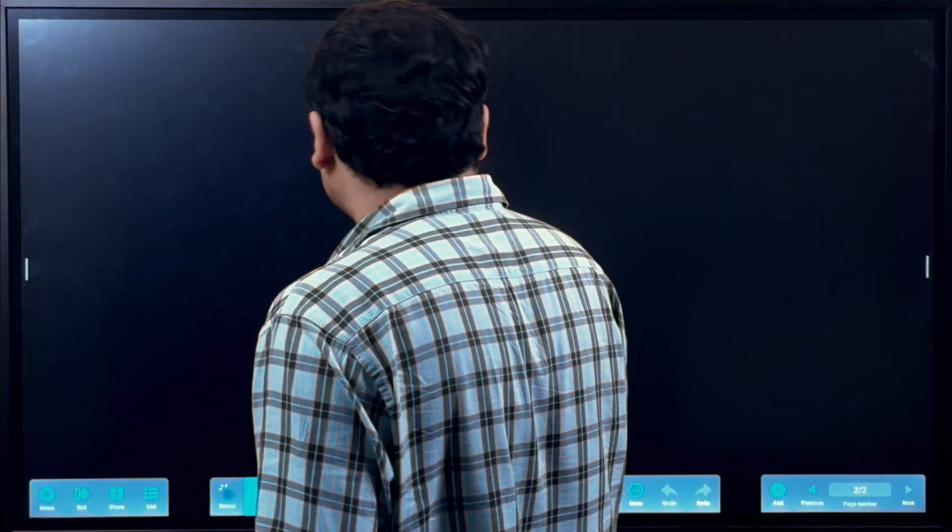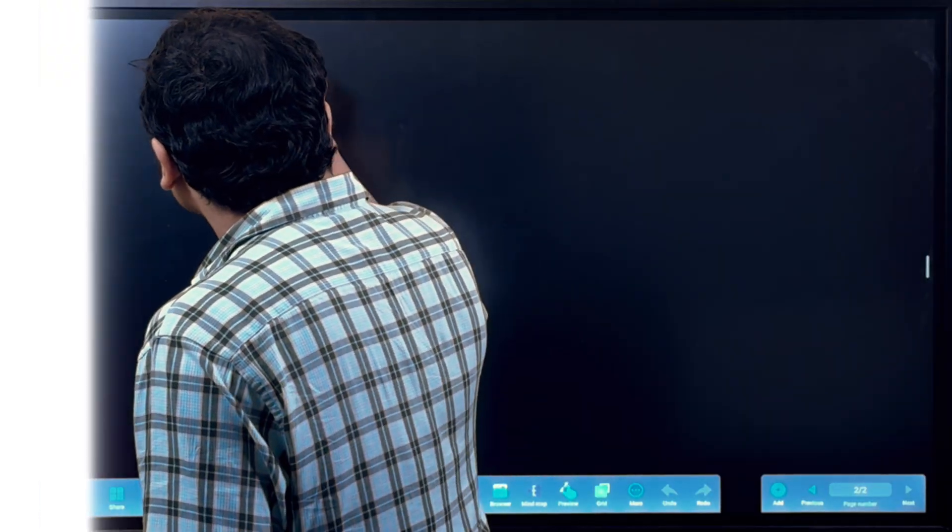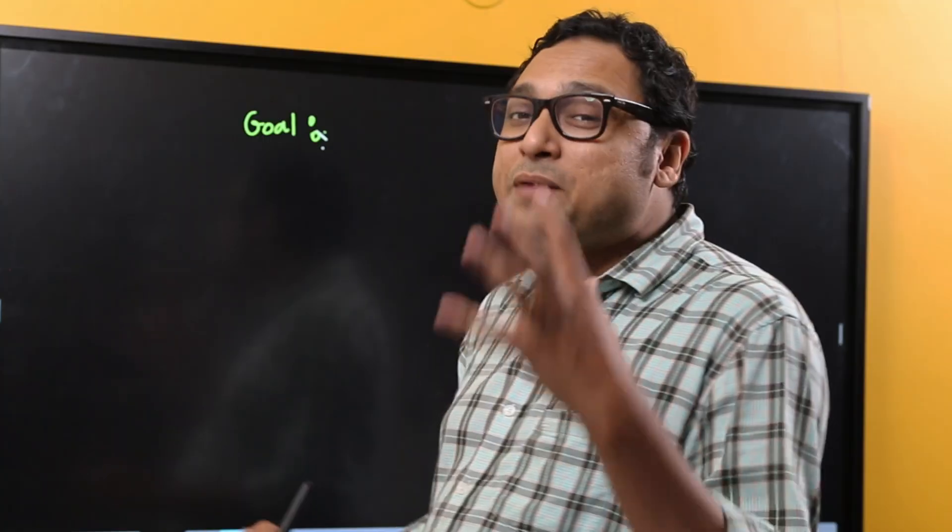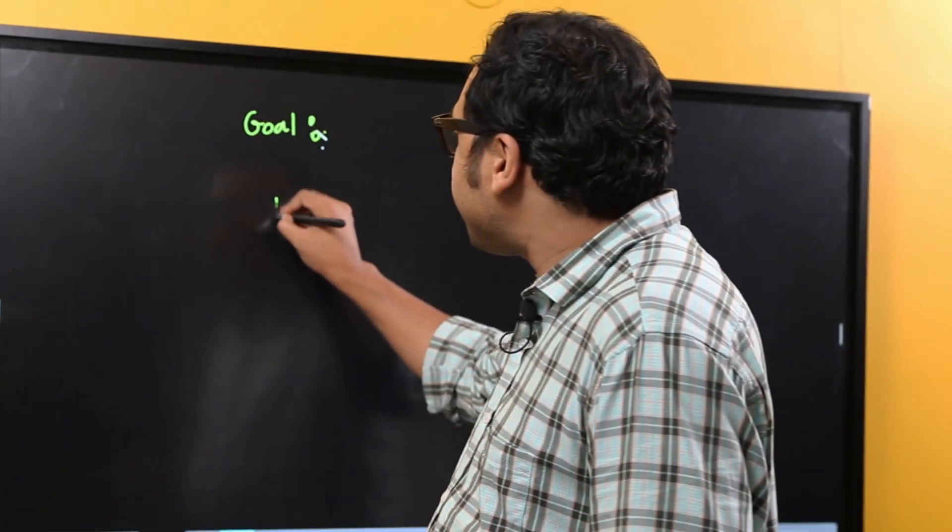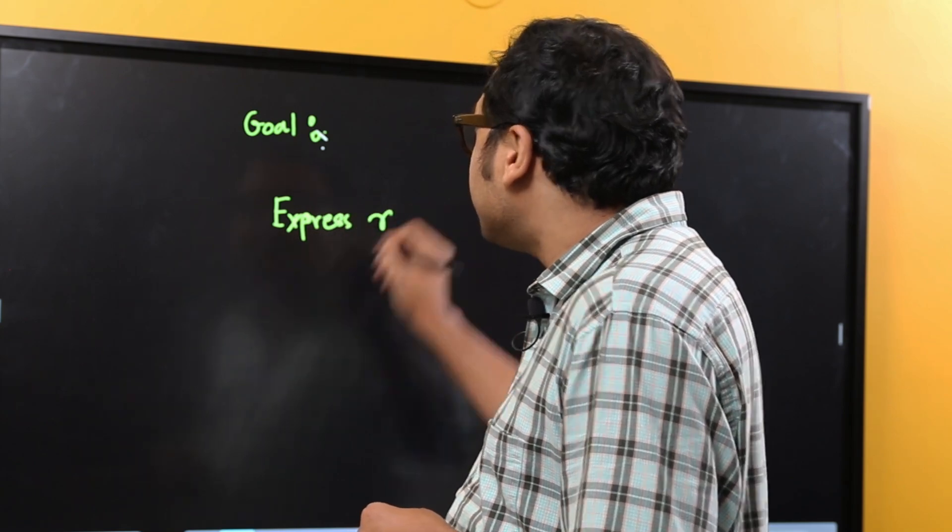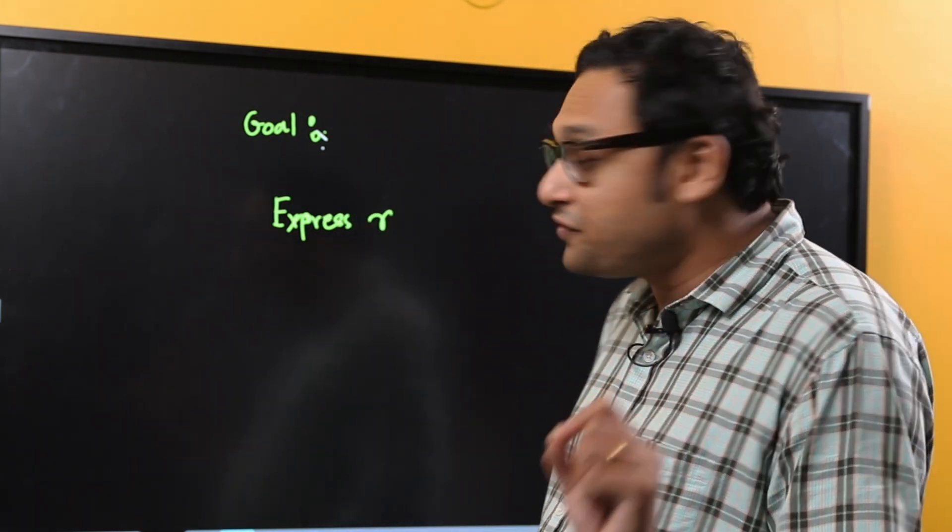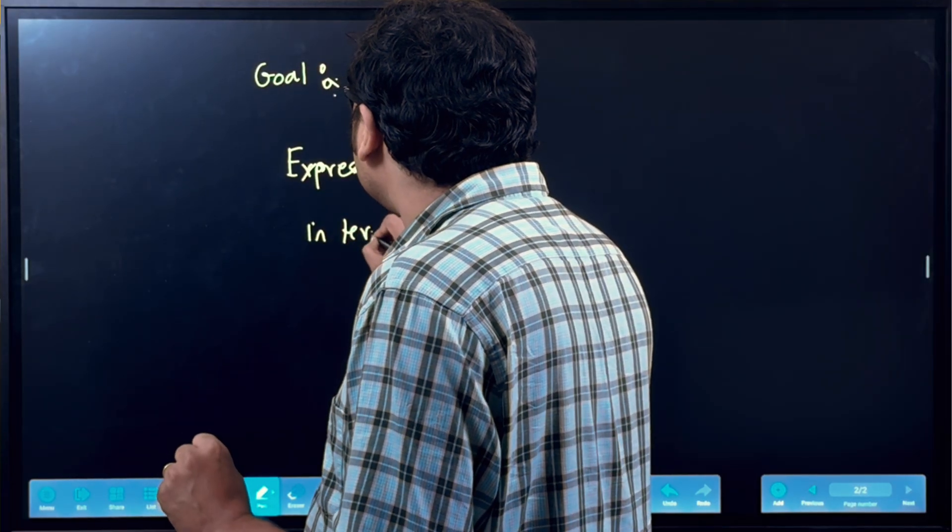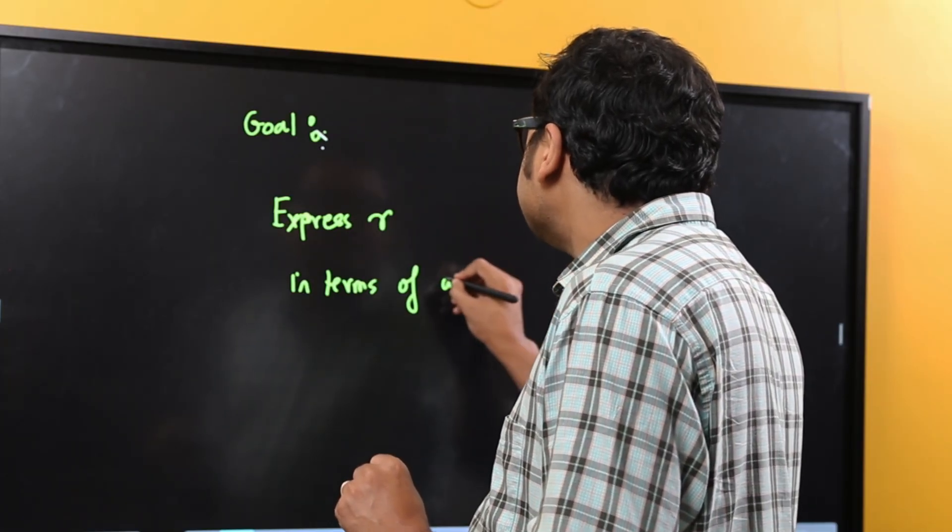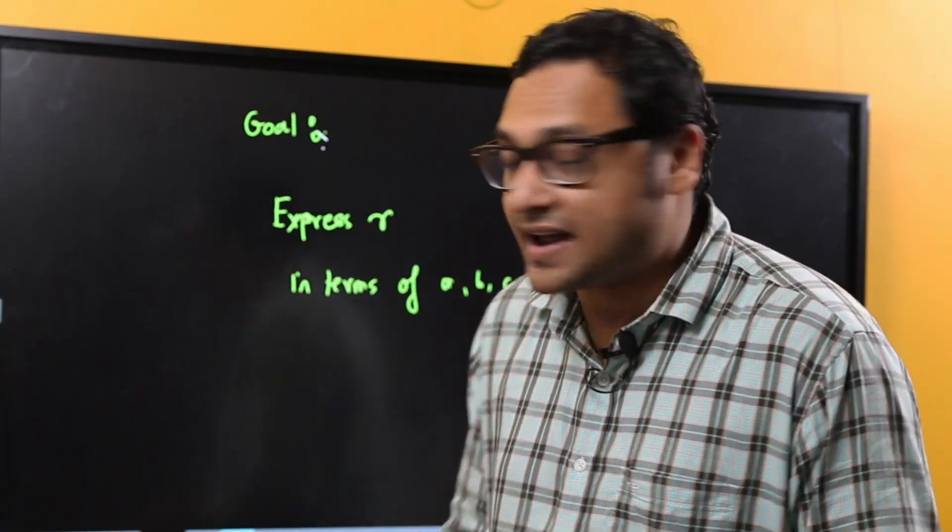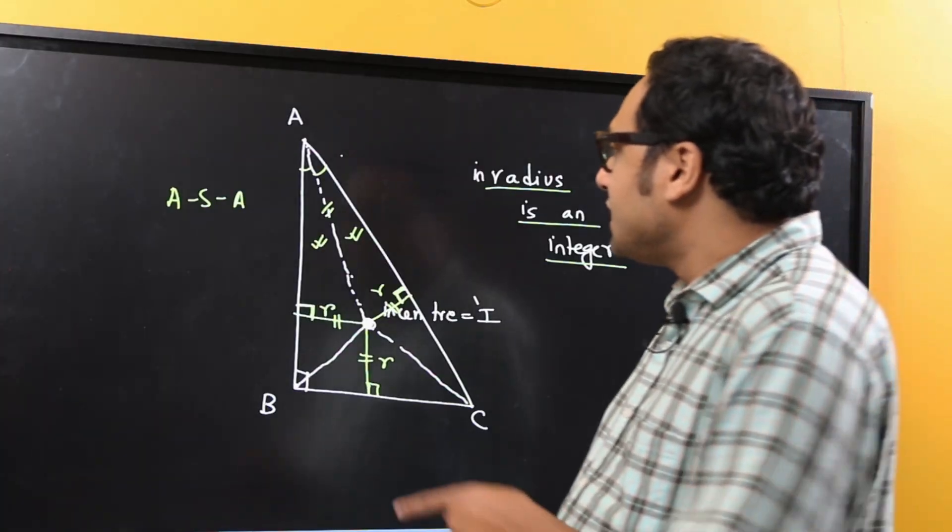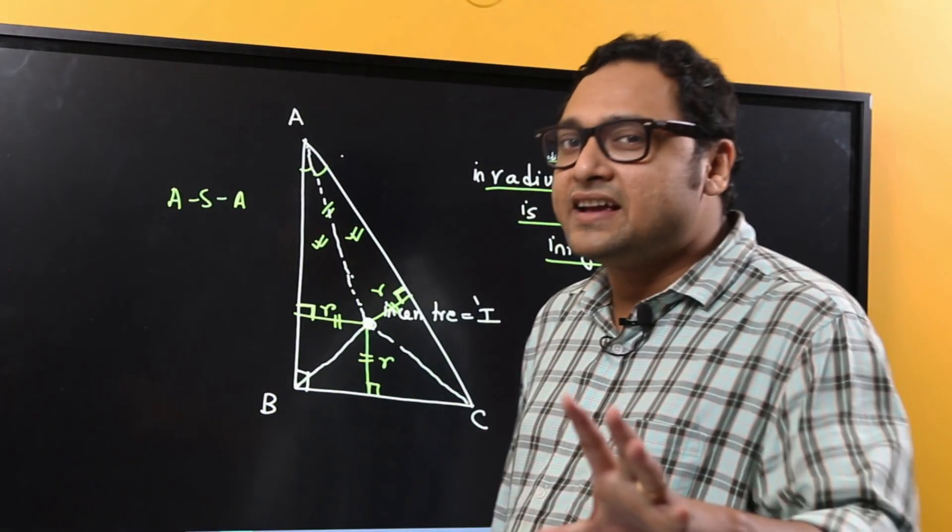So this is the next goal. So let me write on a different page. The next goal is to express the in-radius, express r in terms of a, b and c, the three sides of the right triangle. So how can I do that? If I go back to the previous board, let us use the area technique here.